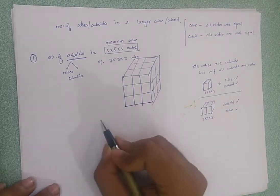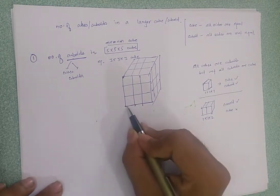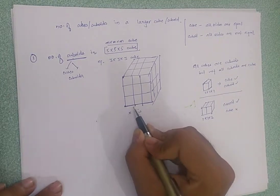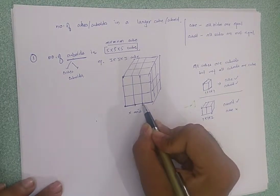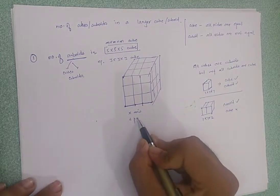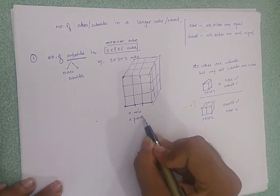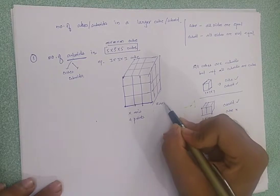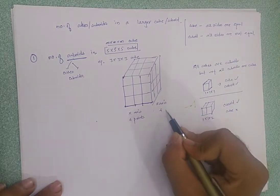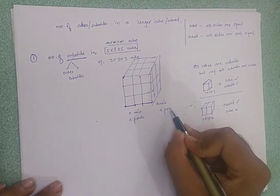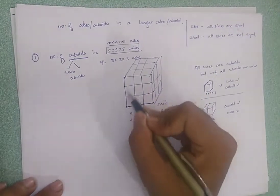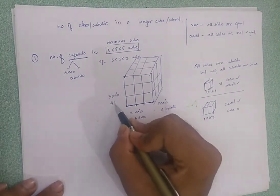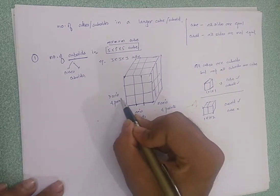In a 3×3×3 cube, we have 3 units along the x-axis. How many points do we have? 1, 2, 3, and 4 — so we have 4 points on the x-axis. Similarly, on the z-axis we have 4 points, and on the y-axis we have 4 points as well.